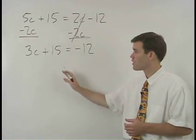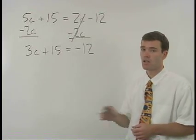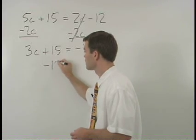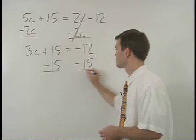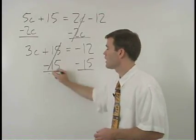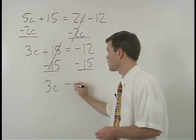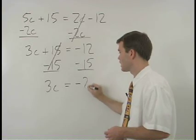Now we want to put our numbers together on the right side of the equation and we do that by subtracting 15 from both sides. On the left we have 3c and on the right negative 12 minus 15 is negative 27.